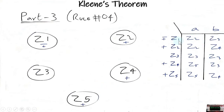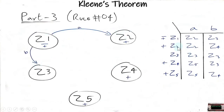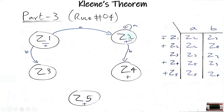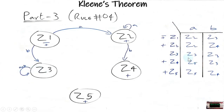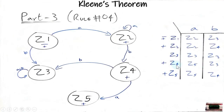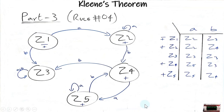From z1, getting input a goes to z2 and input b goes to z3. From z2, getting input a remains at z2, and input b goes to z4. Similarly, with z3, getting either a or b remains in z3, and z4 and z5 are handled accordingly. This is how you prove the Kleene theorem part 3, rule 4.